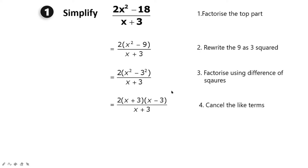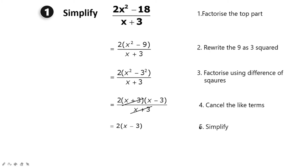The next step is to cancel the like terms. Since (x + 3) appears in both the numerator and denominator, we cross them out. We're left with 2(x - 3). We can further simplify: 2 times x is 2x, and 2 times negative 3 is negative 6, giving the final answer 2x - 6.